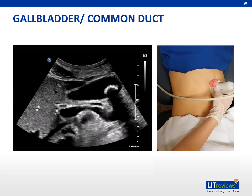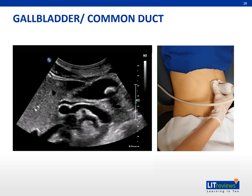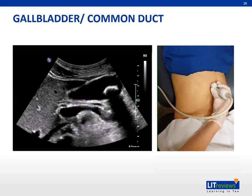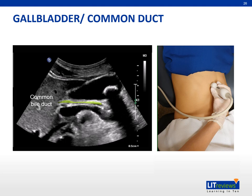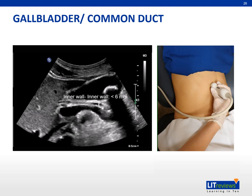With the superior end of the transducer at the middle part of the right costal margin, locate the common bile duct. You may need to angle, rotate, or slide the transducer to achieve a good image. The common bile duct typically lies anterior to the main portal vein in the porta hepatis, with the hepatic artery lying between them. The duct is measured from inner wall to inner wall and usually measures under 6 mm. The rule of thumb is to assess the entire length of the common bile duct distally to the pancreatic head.